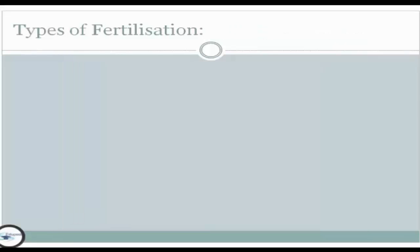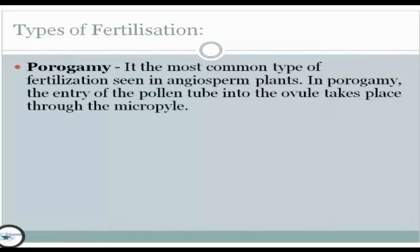We also have types of fertilization. First, we have porogamy. It is the most common style of fertilization seen in angiosperm plants. In porogamy, the entry of the pollen tube into the ovule takes place through the micropyle.